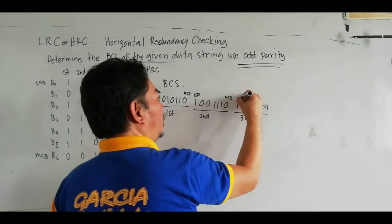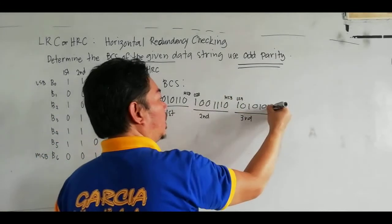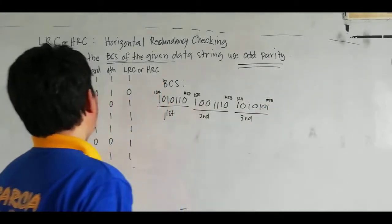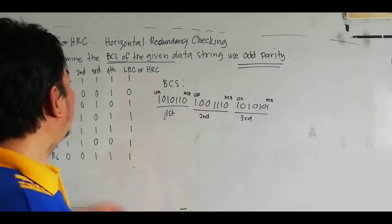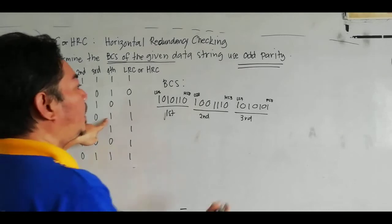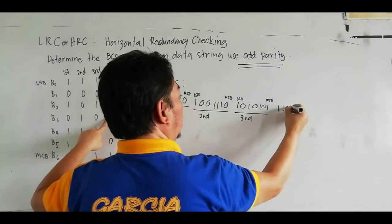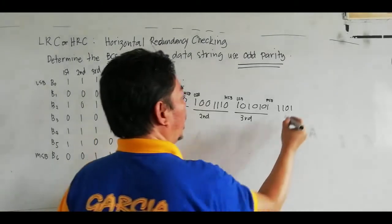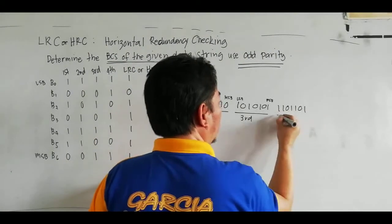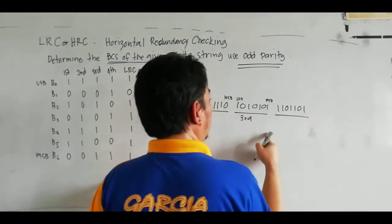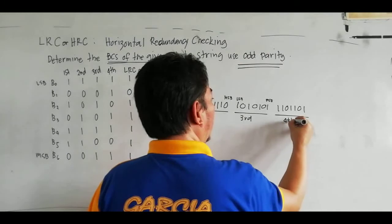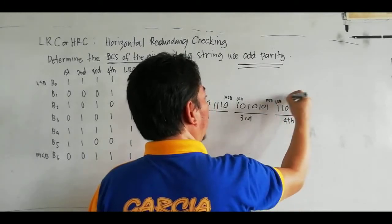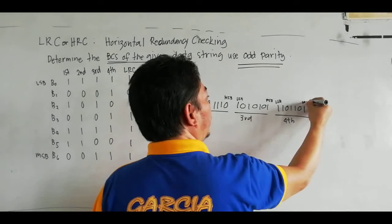The fourth data string is: 1, 1, 0, 1, 1, 1, 0, 1, 1, 0, 1. This is your fourth data string. This is your LSB and this is your MSB.